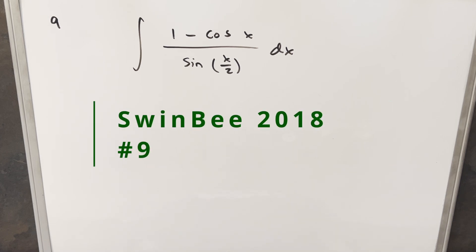Okay, we have here today another integral from Swinby 2018. This was problem number nine. We have the integral of one minus cosine x over sine x over two dx.